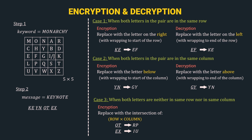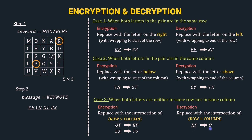Case 3 decryption: both letters are neither in the same row nor the same column. Interestingly, in case 3 both encryption and decryption follow the same rule — replace with the intersection of the current letter's row and the next letter's column. Taking diagram RP — we locate R and P in the matrix. For R: take row of R and column of P — intersection is O. So R is replaced by O. For P: take row of P and column of R — intersection is T. So P is replaced by T. RP decrypts to OT.